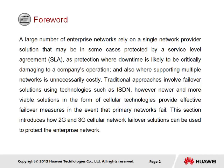Traditional approaches involve failover solutions using technologies such as ISDN. However, newer and more viable solutions in the form of cellular technologies provide effective failover measures in the event that the primary network fails. This section introduces how 2G and 3G cellular network failover solutions can be used to protect the enterprise network.